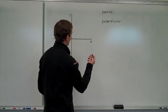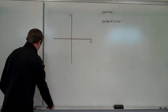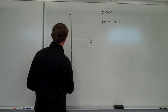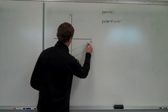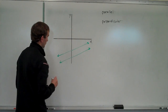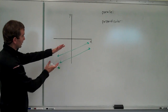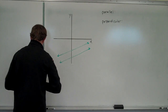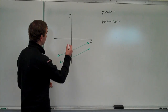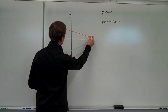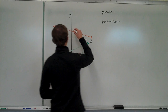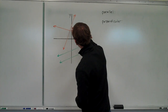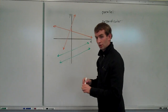Two parallel lines in the coordinate plane might look something like this — they'll go on forever and they'll never cross. Perpendicular lines might look like this, where they intersect to create a right angle.